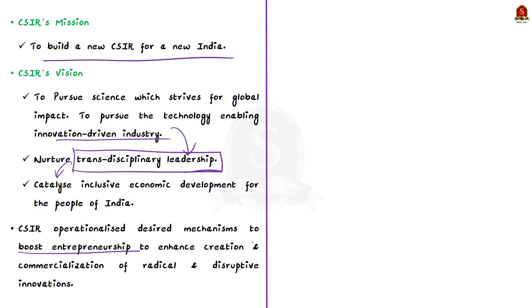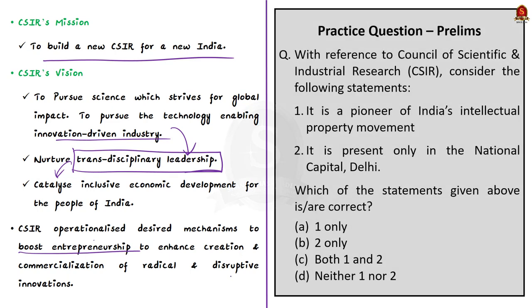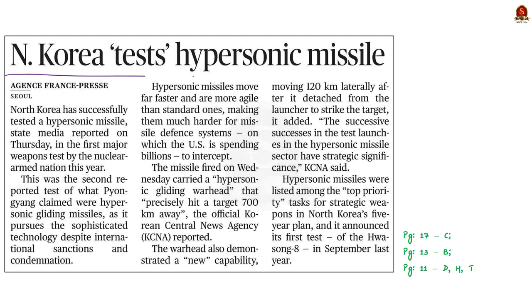Make note of these CSIR points — very important for prelims and useful for mains answer writing, especially in science and technology questions. The next article talks about the successful testing of a hypersonic missile by North Korea. This was the second reported test of a hypersonic gliding missile; the first was the Hwasong-8, tested in September of last year.